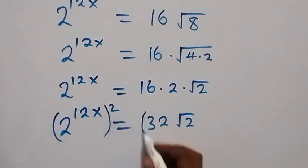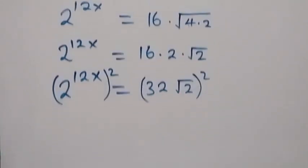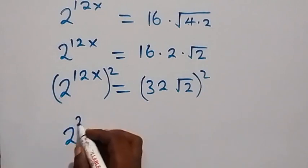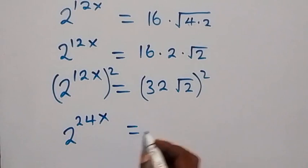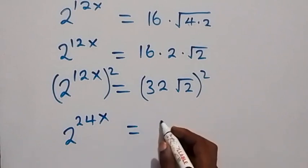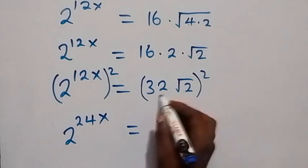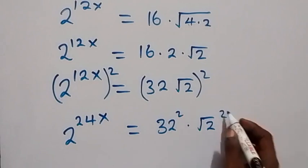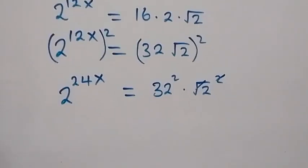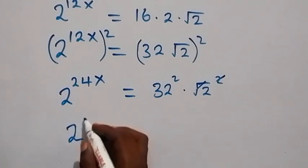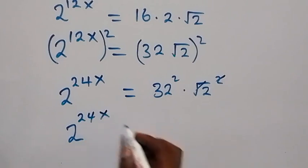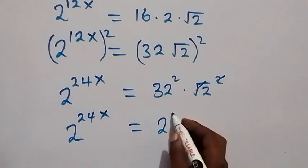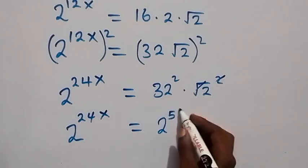Squaring again, we multiply the powers and get 2 raised to power 24x. On the right side, we have 32 squared, with the power affected, and root 2 squared cancels the square root. We then write 32 as 2 raised to power 5 — that is, 2 multiplied by itself five times.